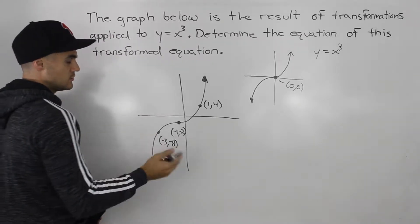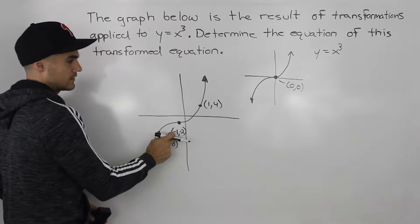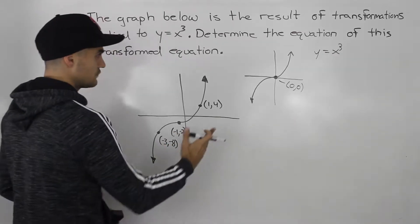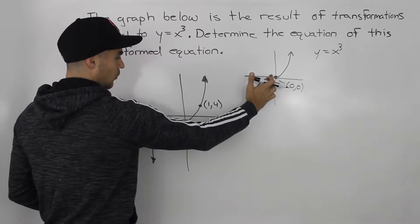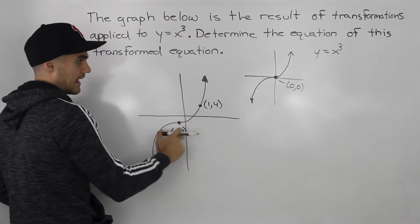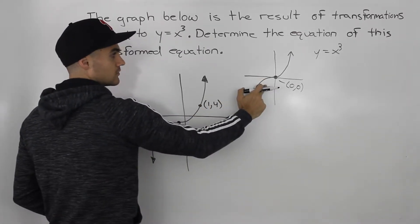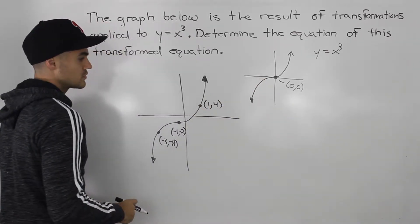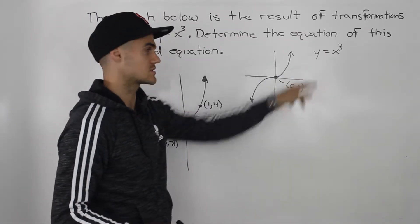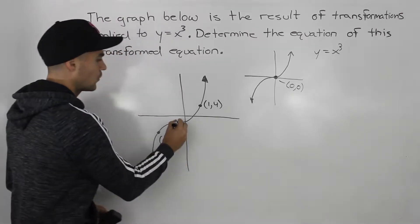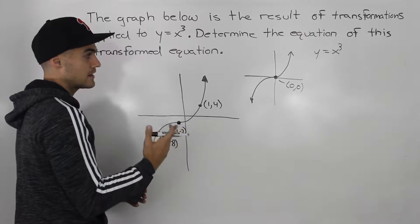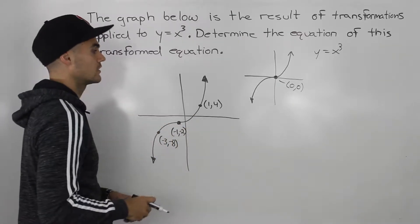And notice that the new saddle point is happening at negative 1 and negative 2. So we know definitely that we shifted this graph one unit to the left, this x value of negative 1, and then 2 units down. So those are the transformations you always want to start with when you're dealing with y equals x cubed. You want to see where is that new saddle point, because it's going to tell you how much you shifted left or right and how much you shifted up or down.